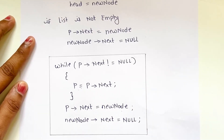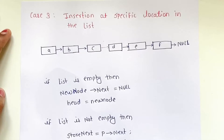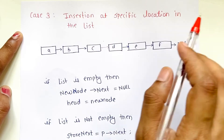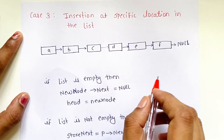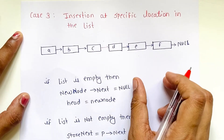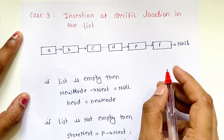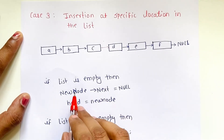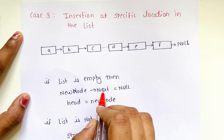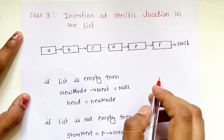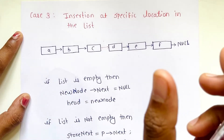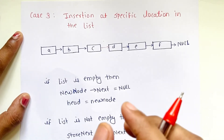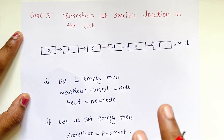Now let's see the third case: insertion at a specific location in the list. If the list is empty, the same logic applies as before — set new_node.next = null and point head to the new node.